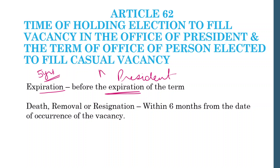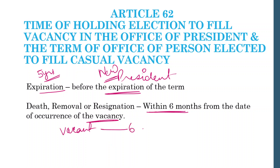Article 62 states that a new president must be ready — we cannot leave the seat vacant for more than the required period. We know the term will be five years and when it expires we will be ready with a new president. In cases of death, removal, or resignation of the President, a new election must be held within six months.